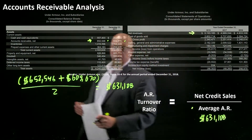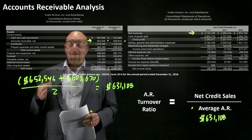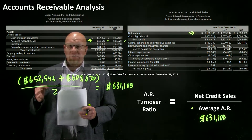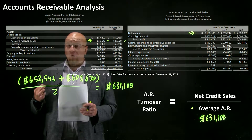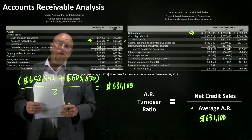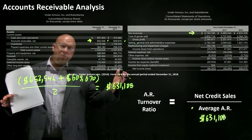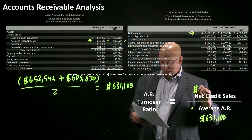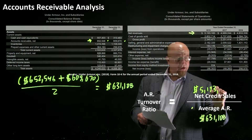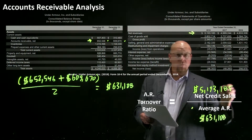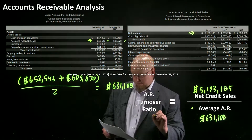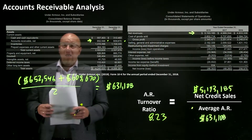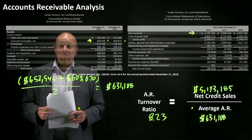Now we need net credit sales. The reason it's net credit sales is that if the company collects payment via cash, there's no risk of non-payment — they've already been paid. We only worry about credit sales because we're measuring the risk of not getting paid or getting paid slowly. For a company like Under Armour, we can assume these are all credit sales. The 2018 income statement shows credit sales of $5.2 billion, giving Under Armour an accounts receivable turnover ratio of just over 8.2.